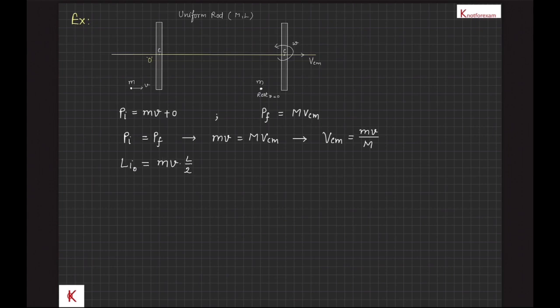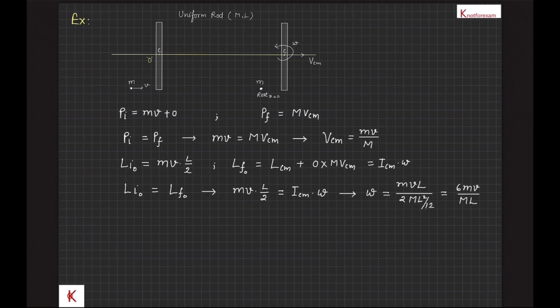And initial angular momentum of the rod about point O, that is the initial position of the center of mass of the rod, LiO is equal to mv into l by 2. That should be equal to final angular momentum LFO by angular momentum conservation principle. And that is equal to angular momentum about center of mass that is icm omega plus angular momentum of center of mass about O that is 0. Therefore, mv into l by 2 is equal to icm into omega or omega equal to 6 mv upon ml.